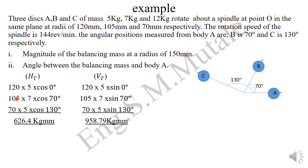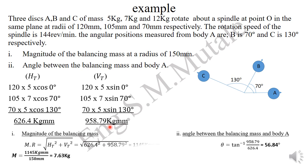For mass B: 7 kg × 105 mm × cos(70°). Adding all terms for A, B, and C gives a total horizontal component of 626.4 kg·mm. For the total vertical components, replacing cosines with sines and summing all terms gives 958.79 kg·mm.